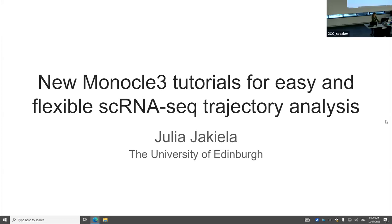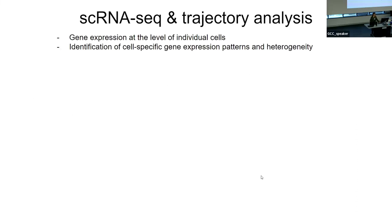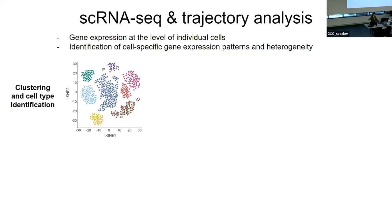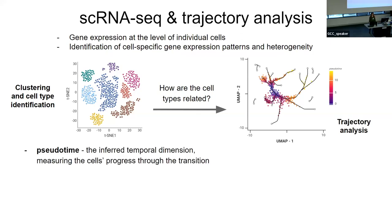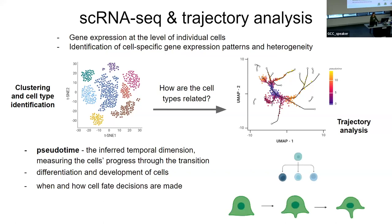Single cell sequencing provides gene expression at the level of individual cells. We can group them based on expression patterns and identify cell types. Trajectory analysis answers the question: how are those cell types related to each other? In order to do so, a trajectory analysis computes pseudo time, which basically measures how the cells progress through biological transition.